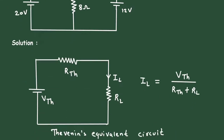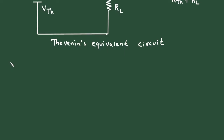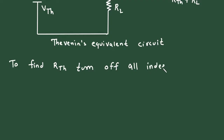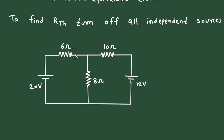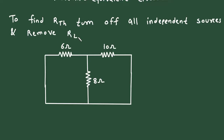Now first of all, we will find the value of Rth. To find Rth, turn off all independent sources. Here in this circuit we have to find the value of Rth. The first step is to turn off all the independent sources. When we turn off this voltage source, it will be short circuited. Also, we have to remove RL. So this is the load resistor RL — we remove it, and now this will be our Rth, that is Thevenin's resistance.